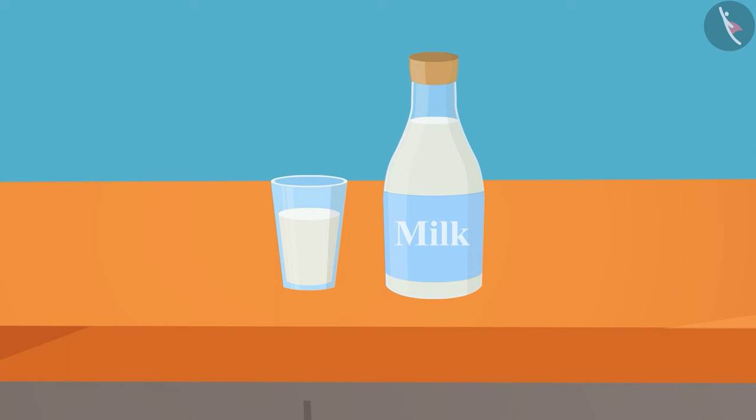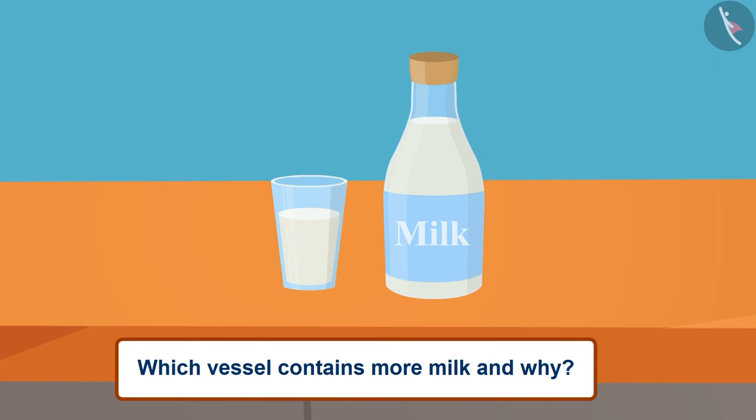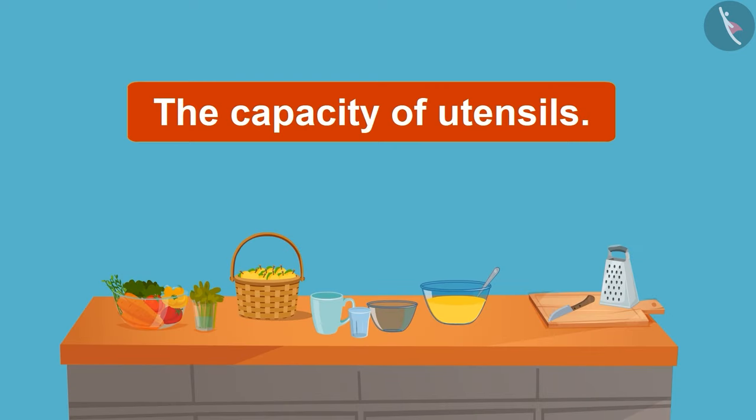Children, now it's your turn to measure the capacity of utensils. A glass and a bottle contain milk. Which vessel contains more milk, and why? Think of the answer to the question and share it with your family and friends. Today we learnt about the capacity of utensils.